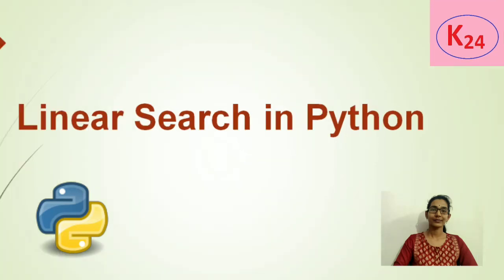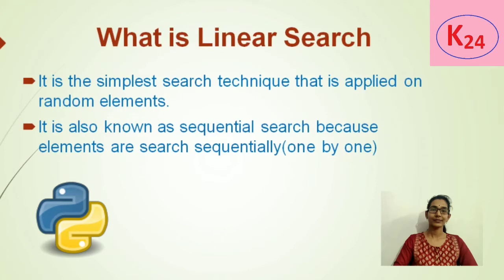So let's start. Linear search is the simplest searching technique that is applied on random elements. It is also known as sequential search because the elements are searched sequentially, one by one.